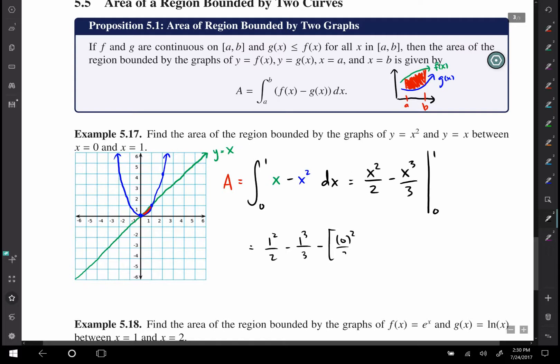Minus 0² over 2 minus 0³ over 3. Of course the second part is just 0, and the first part is 1/2 minus 1/3. Well, 1/2 minus 1/3 is the same as 3/6 minus 2/6, so that is 1/6. So the area of this red shaded region is 1/6, and that's all there is to it.